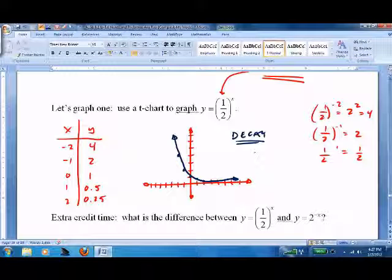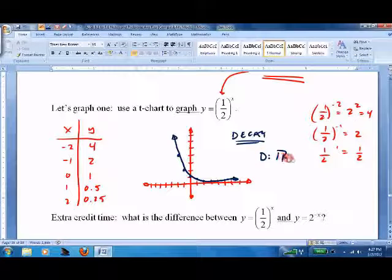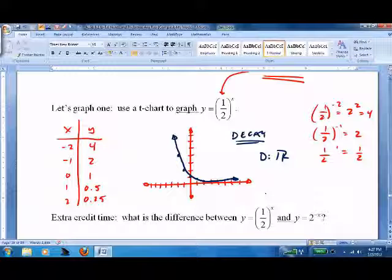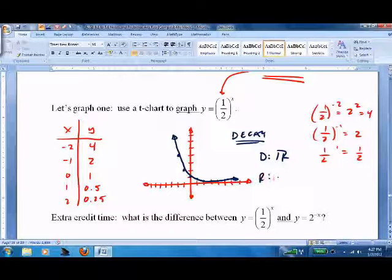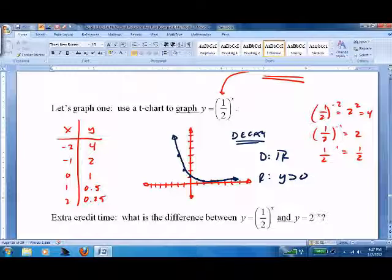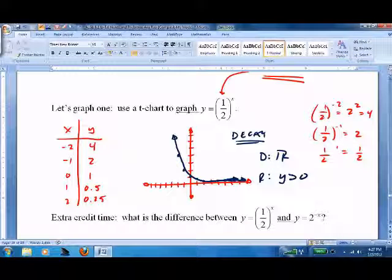So this is exponential decay. Its domain is all reals - you put any x value in, you're not going to blow up the calculator. And its range is y is greater than zero. It never actually hits zero, keeps getting closer and closer. My line here should be more like this - it gets closer and closer to the x axis.